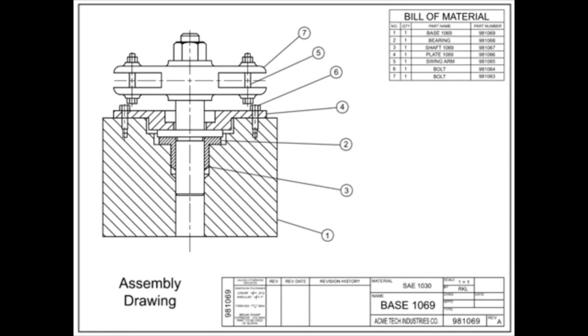Assembly drawings can show exploded views or section views. This drawing utilizes a section view to better identify each item in the assembly and to give an interior view